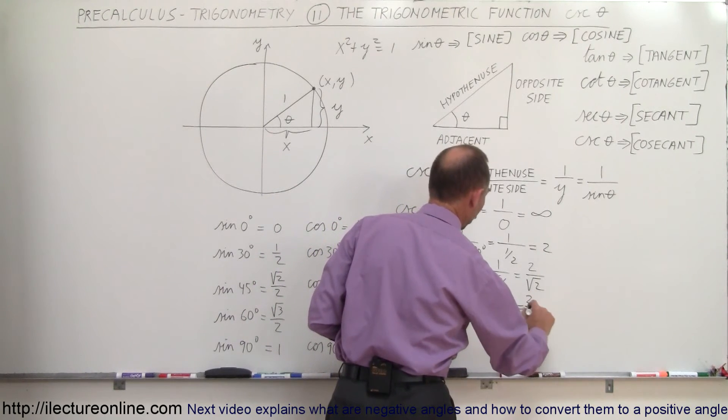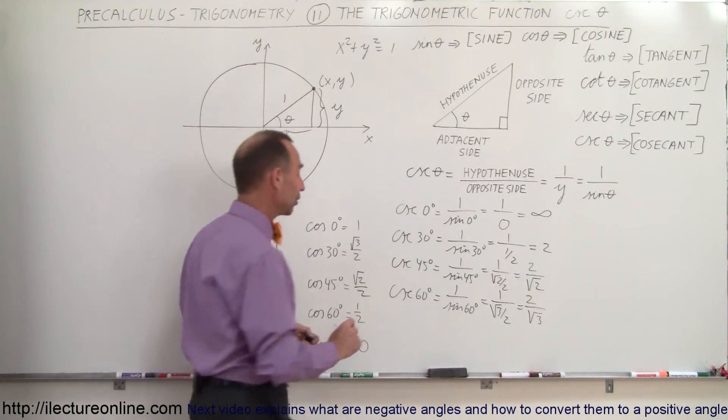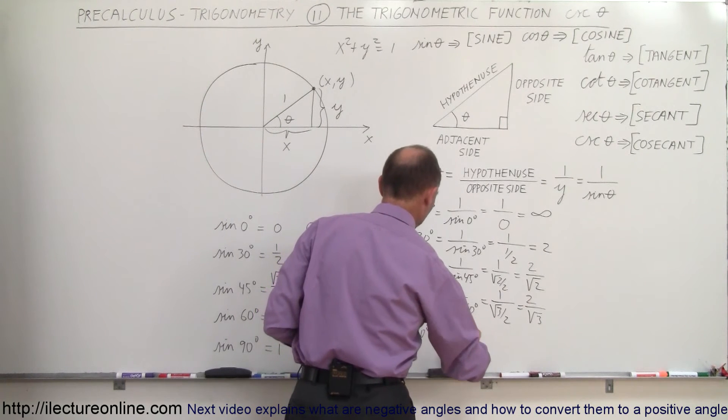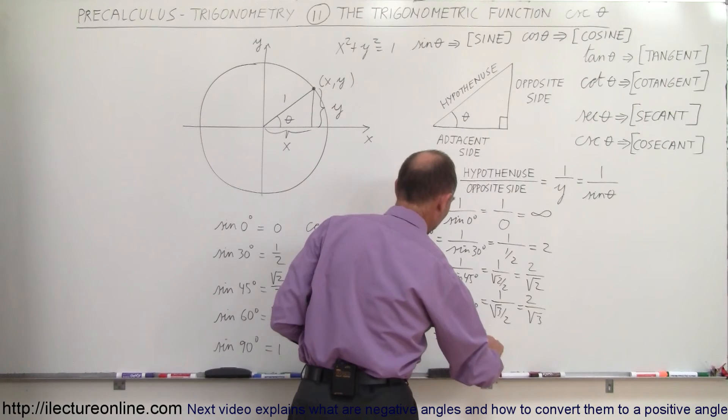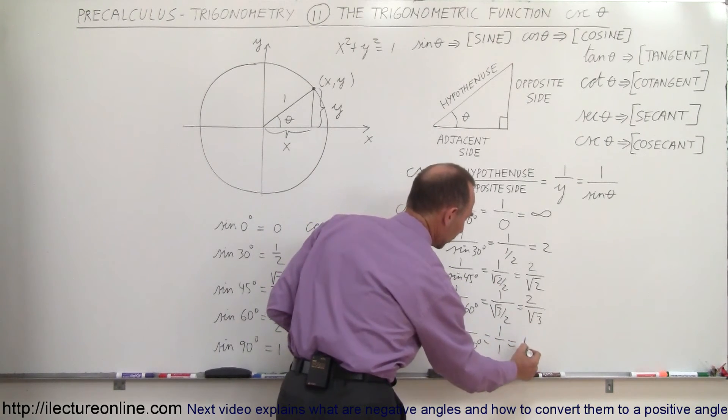And finally, when we take the cosecant of ninety degrees, that is equal to one divided by the sine of ninety degrees, which is equal to one divided by one, which is one.